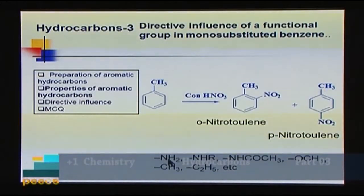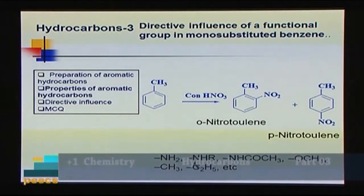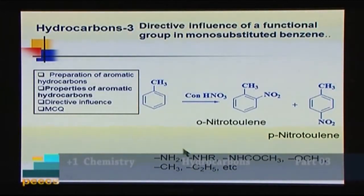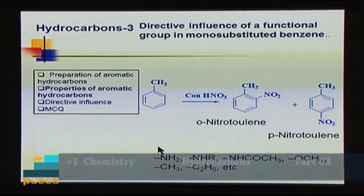Other ortho-para directing activating groups include: –NH₂ (aniline), –NHR (secondary amine), amide group, ether group (–OCH₃), alkyl groups, and the phenolic –OH group. These groups are ortho-para directing and also activate the benzene ring for electrophilic substitution.